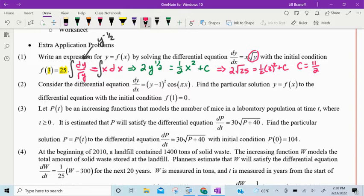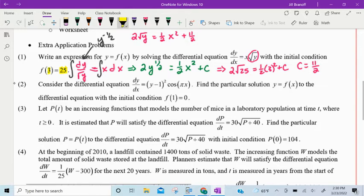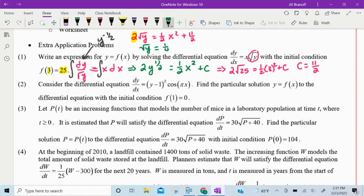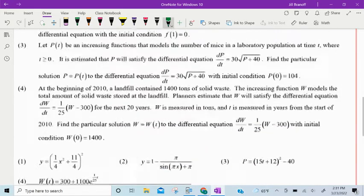So if I go back for a final answer here, there's a bit more work to do. So we have 2 times the square root of y is equal to one-half times x squared plus 11 halves. So that will tell you the square root of y is equal to one-fourth x squared plus 11 halves. You can write that all with a common denominator if you want. And then to get rid of the square root, we'd square both sides. So y is one-fourth x squared plus 11 halves quantity squared. And that's how I left the answer on that one.